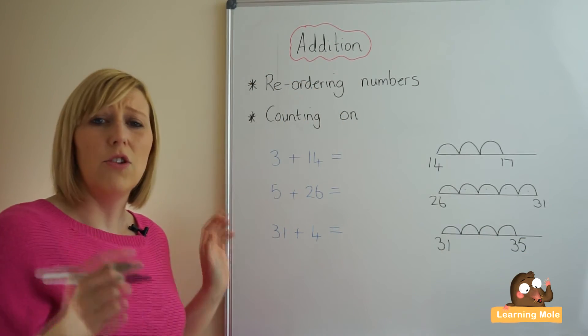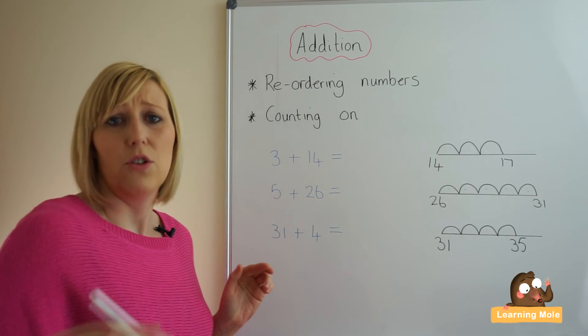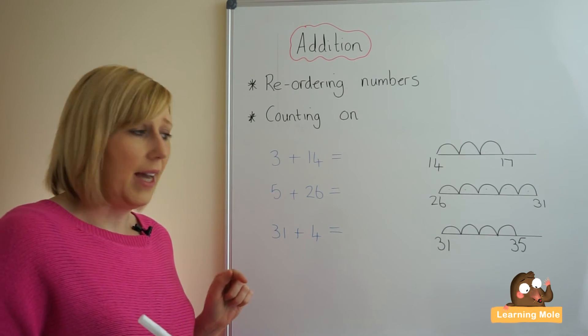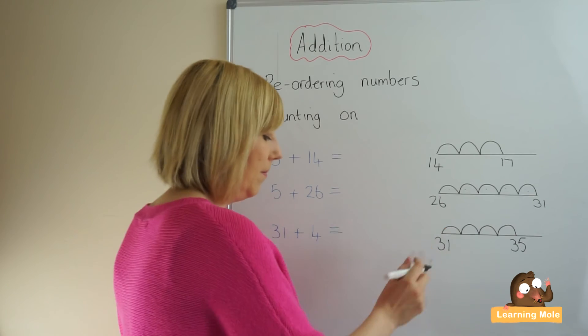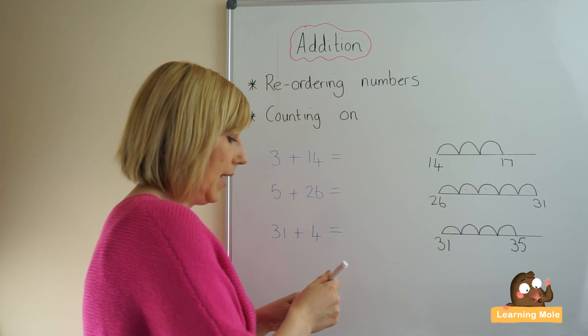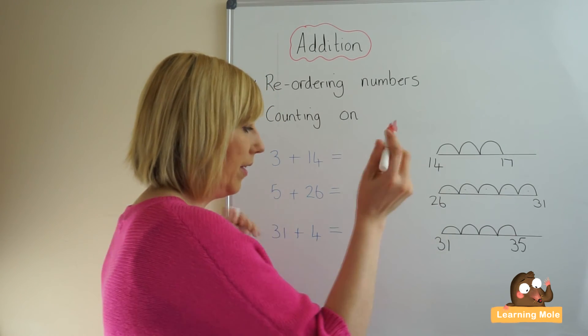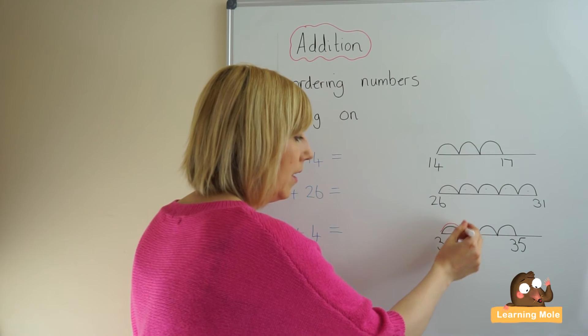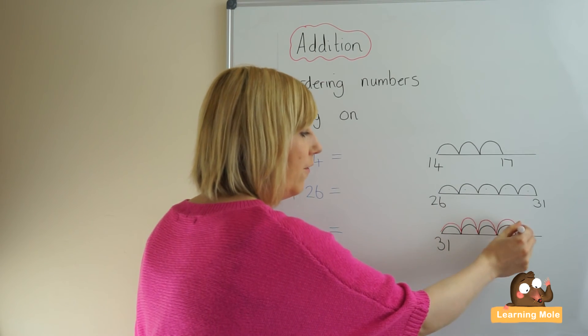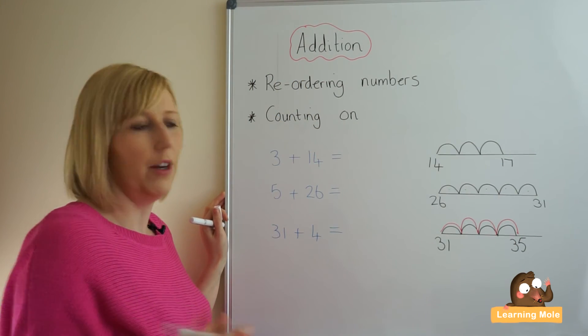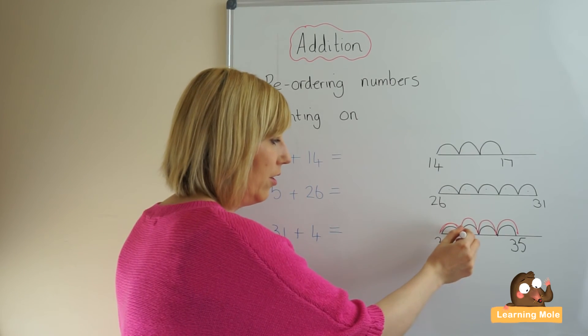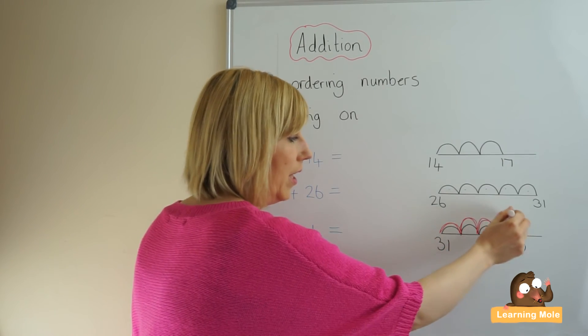If your child is not secure with counting on straight away, it's equally fine to do the jumps first and just say 31, I'll just get a different colour for this, 31, 1, 2, 3, 4, and go back and count 31, 32, 33, 34, 35. It is equally fine to do that.